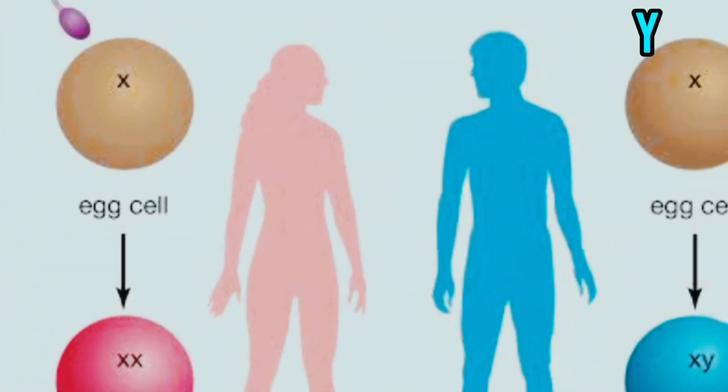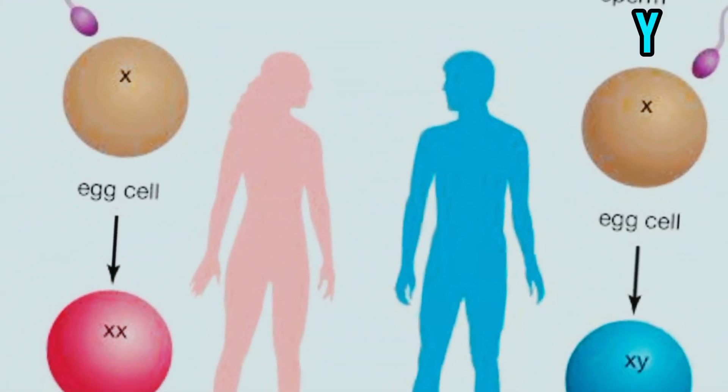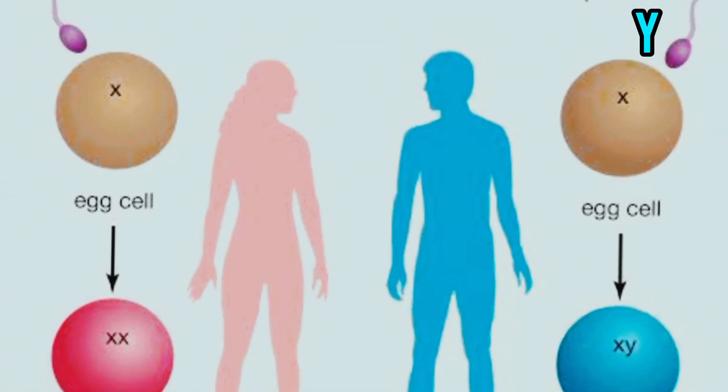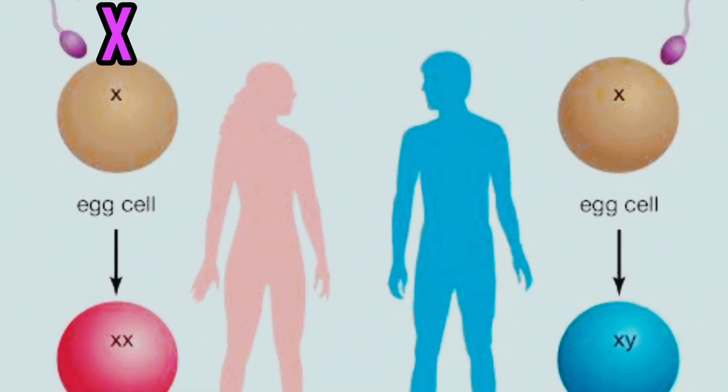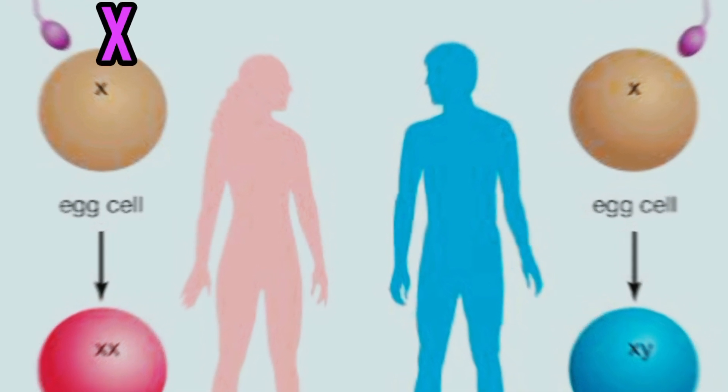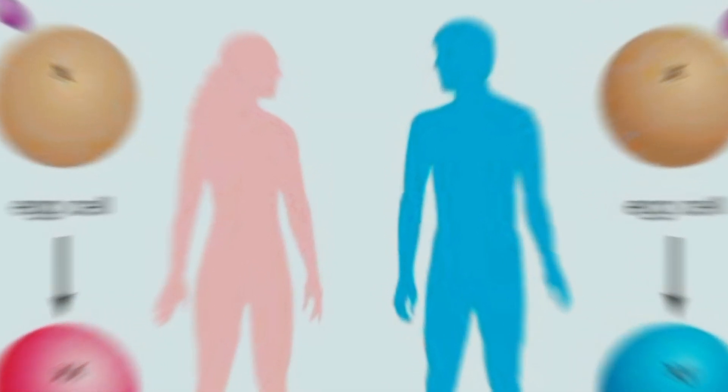If the male sperm contains a Y chromosome, this will result in a baby boy. If the male sperm contains an X chromosome, this will result in a baby girl. So it's all a matter of chance — which sperm reaches the female egg first and then successfully penetrates it.